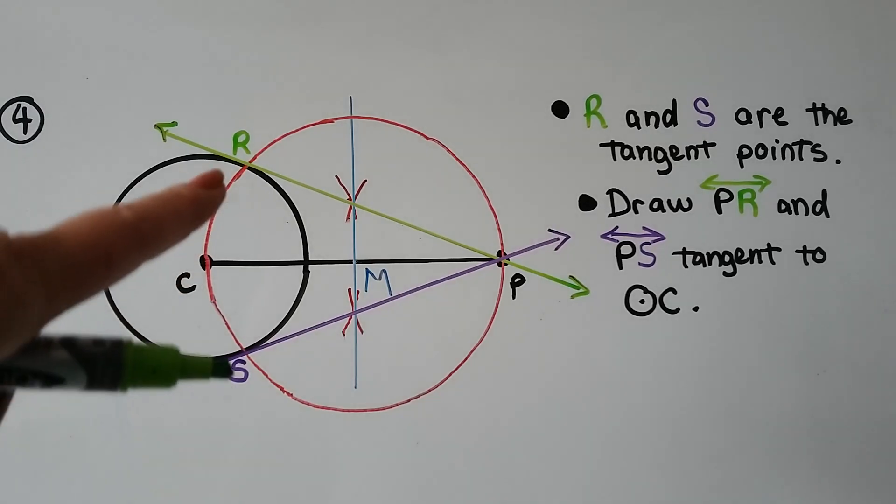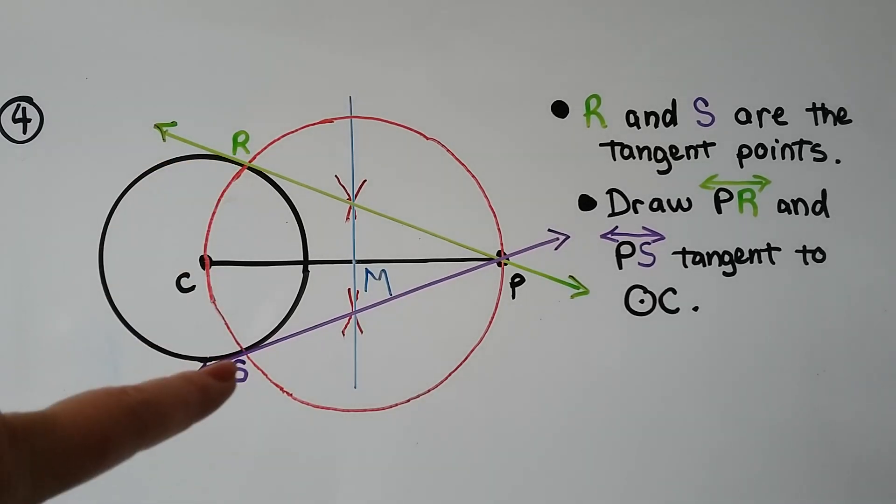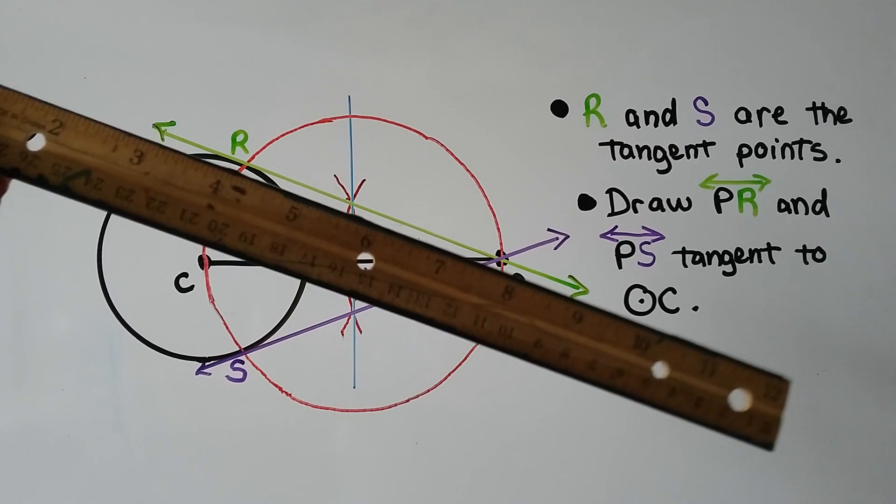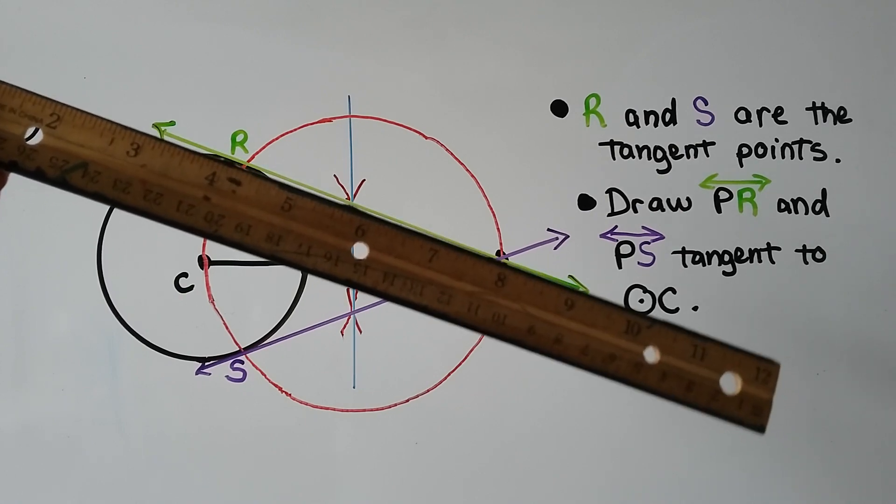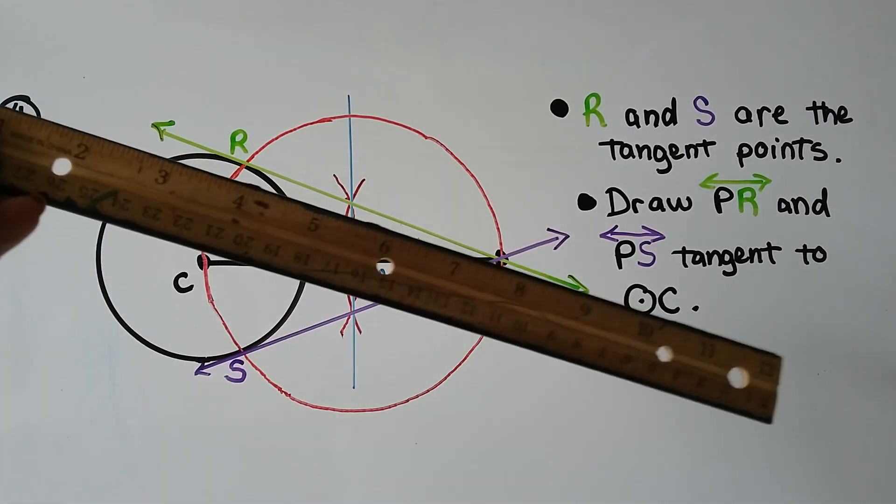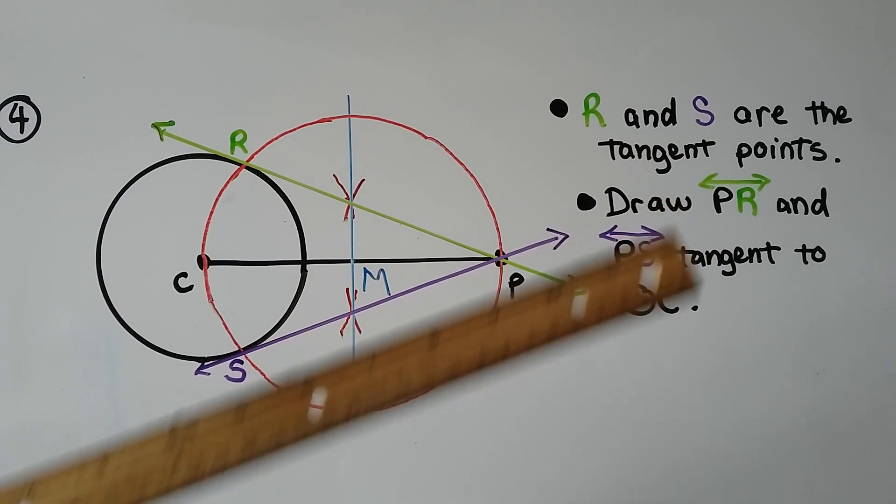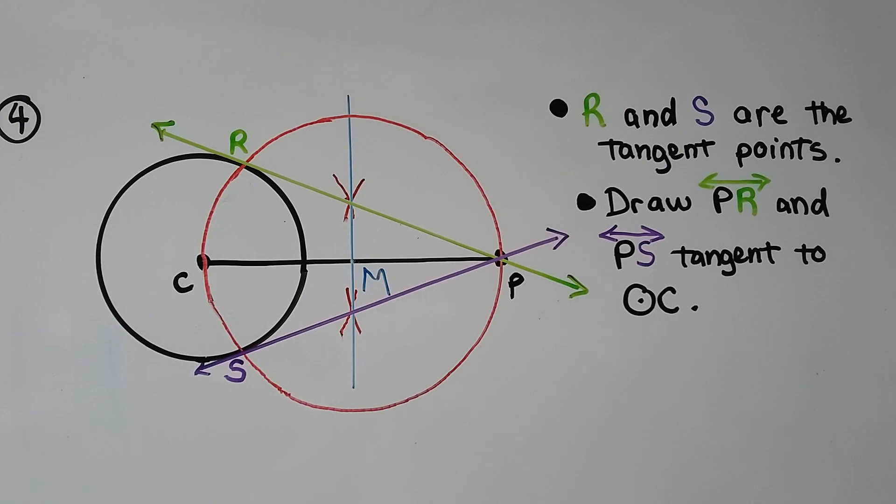Now that we have the intersections R and S here, those are the tangent points. We draw line PR like that. And they're tangent to circle C.